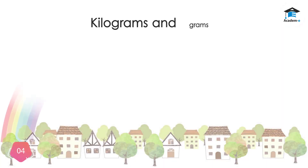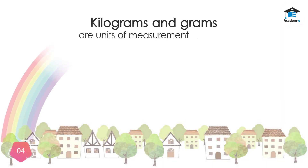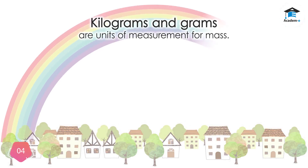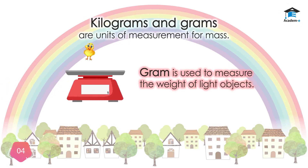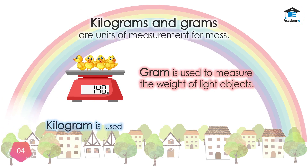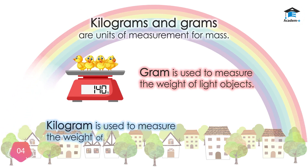Kilograms and grams are units of measurement for mass. Gram is used to measure the weight of light objects. Kilogram is used to measure the weight of heavier objects.